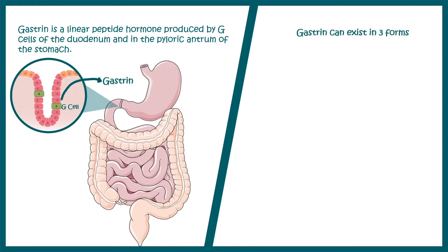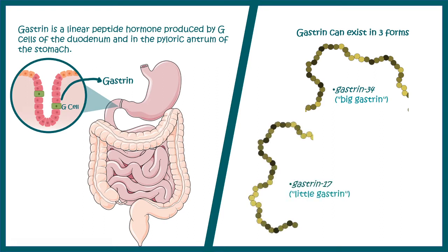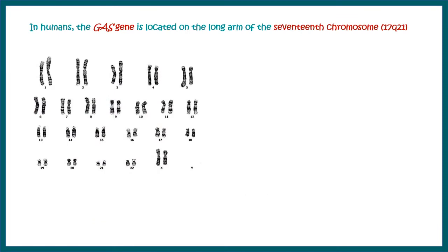Gastrin can exist in three different forms. One is big gastrin, which is 34 amino acids long. Gastrin-17, or little gastrin, is 17 amino acids long, and mini gastrin is 14 amino acids long. As a peptide hormone, gastrin is encoded by a gene known as the GAS gene, which is located on chromosome 17 in humans.